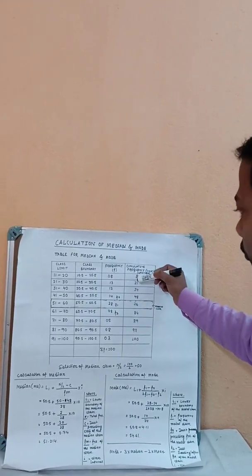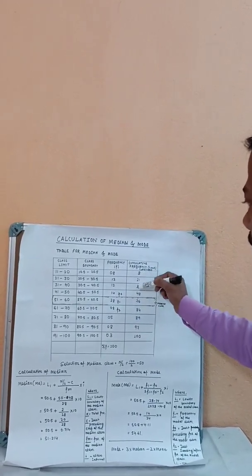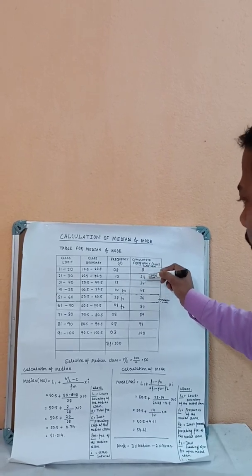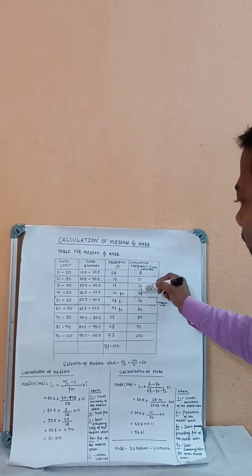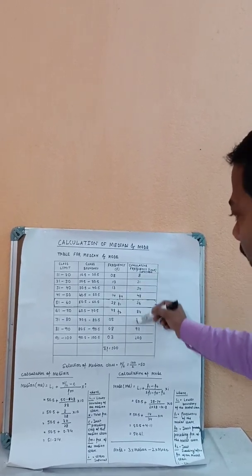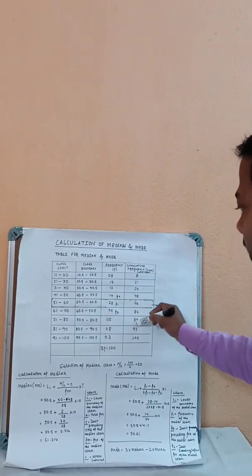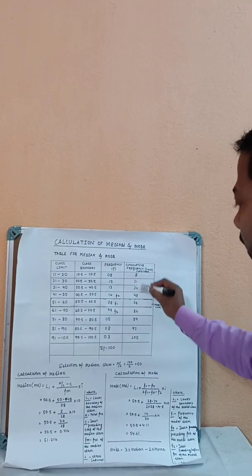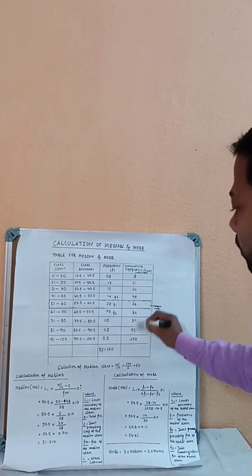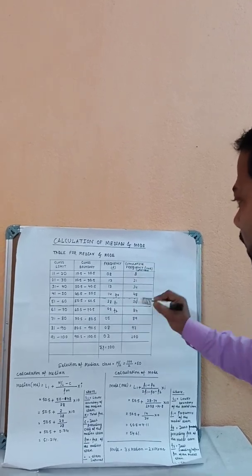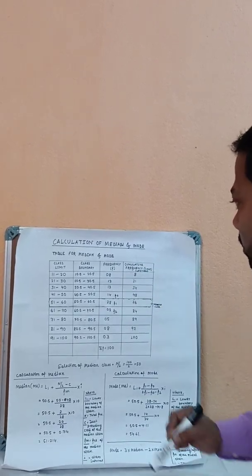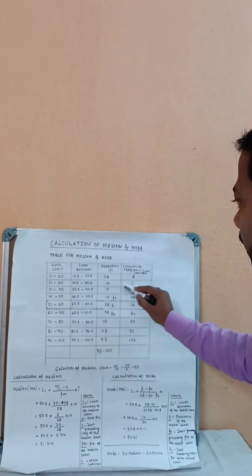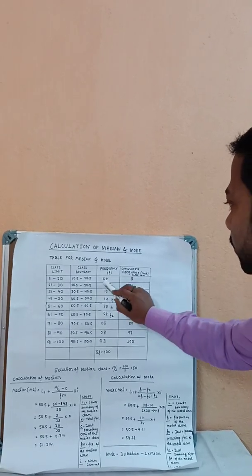The cumulative frequency values are: 8, then 21, then 8 less than 21, then 21 less than 34. That is what the less-than cumulative frequency means — the difference is calculated cumulatively.